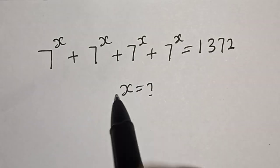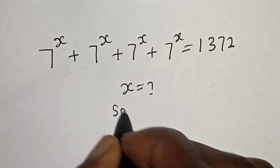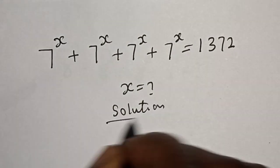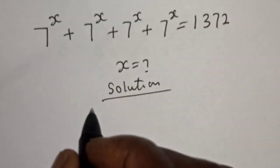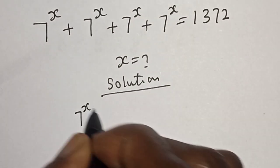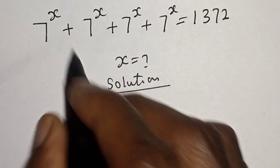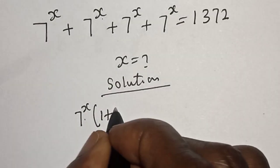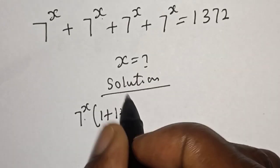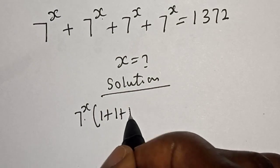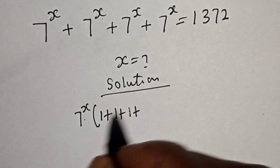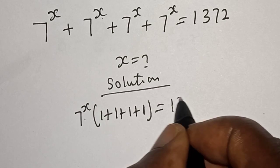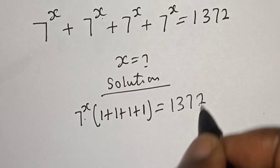Solution: we have 7 raised to power s in common, let's bring it out. Bracket: 7^s divided by 7^s, plus 7^s divided by 7^s, plus 7^s divided by 7^s, plus 7^s divided by 7^s, is equal to 1372.